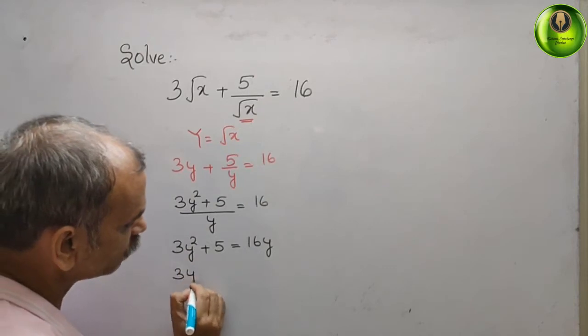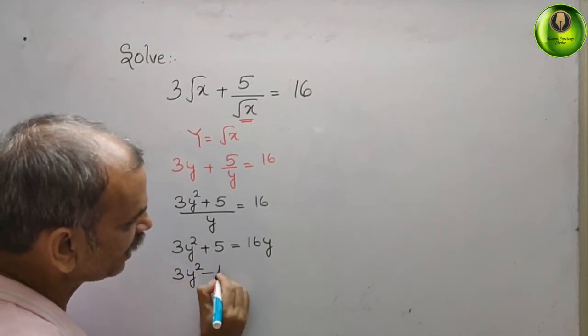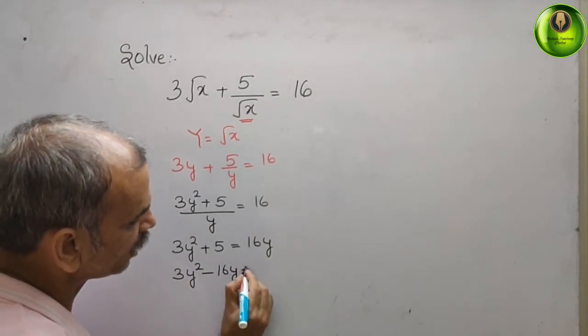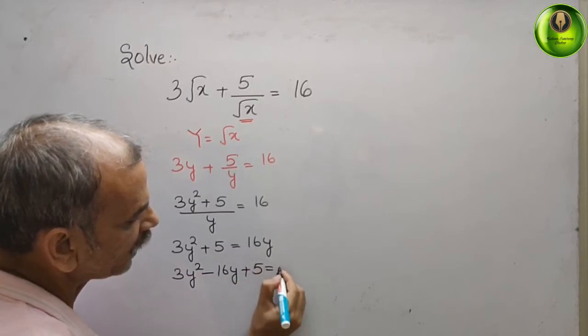So your new equation or you can say a standard equation of a quadratic equation is what? 3y square minus 16y plus 5. That gives you 0.